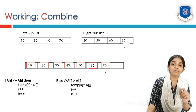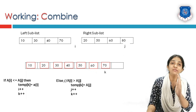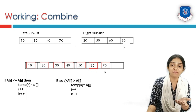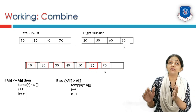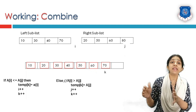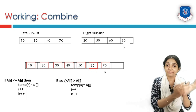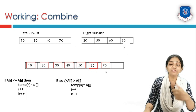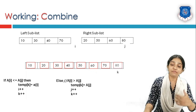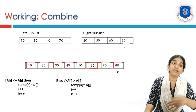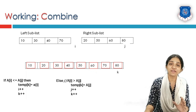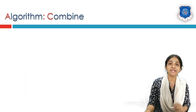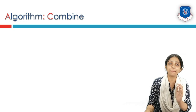Once i goes out of bounds, we copy all remaining elements of the other subarray. In this case, the right subarray's remaining element is 80, which gets copied. This is how the combine algorithm works. Now let us look at the detailed step-by-step combine algorithm.